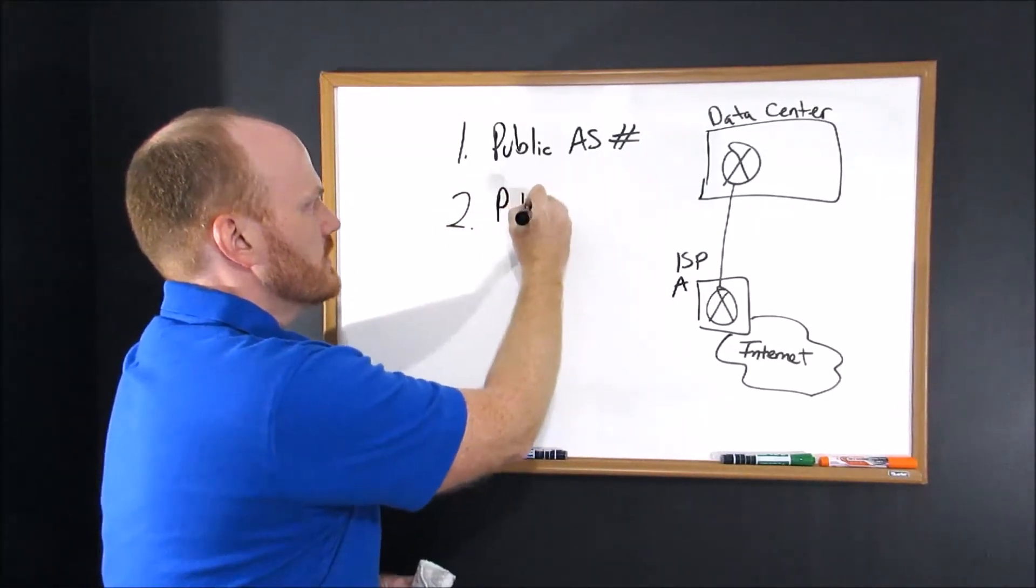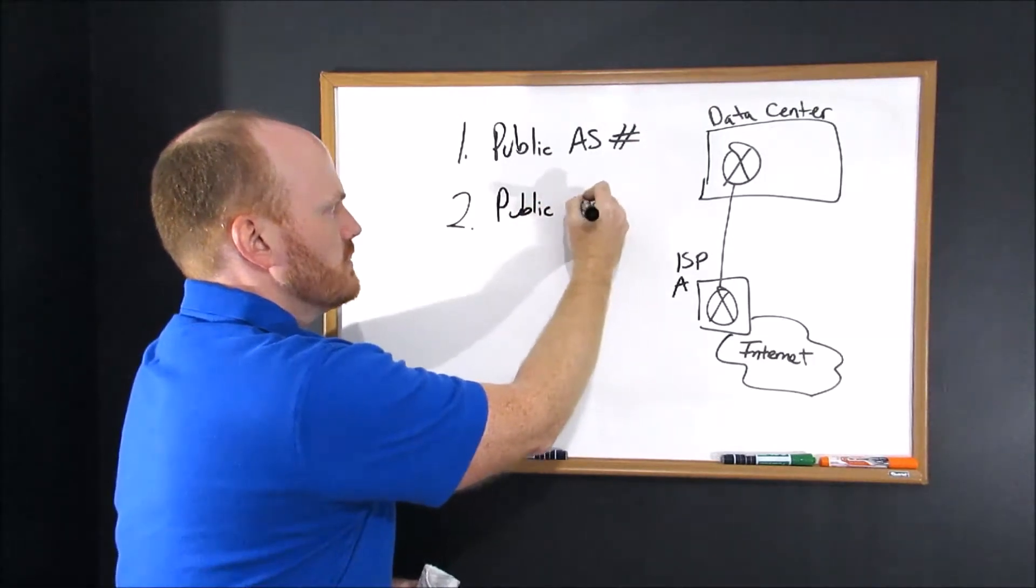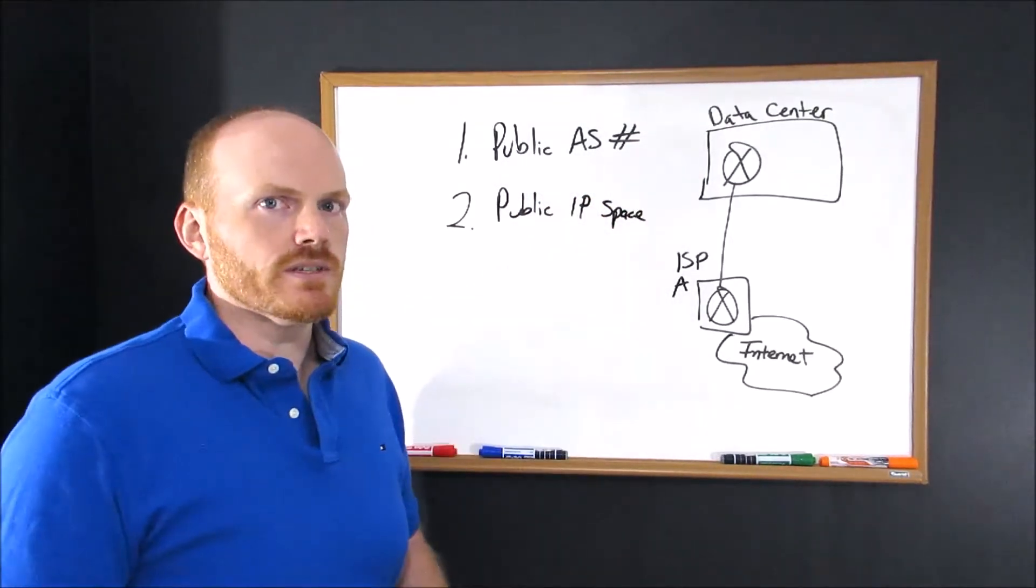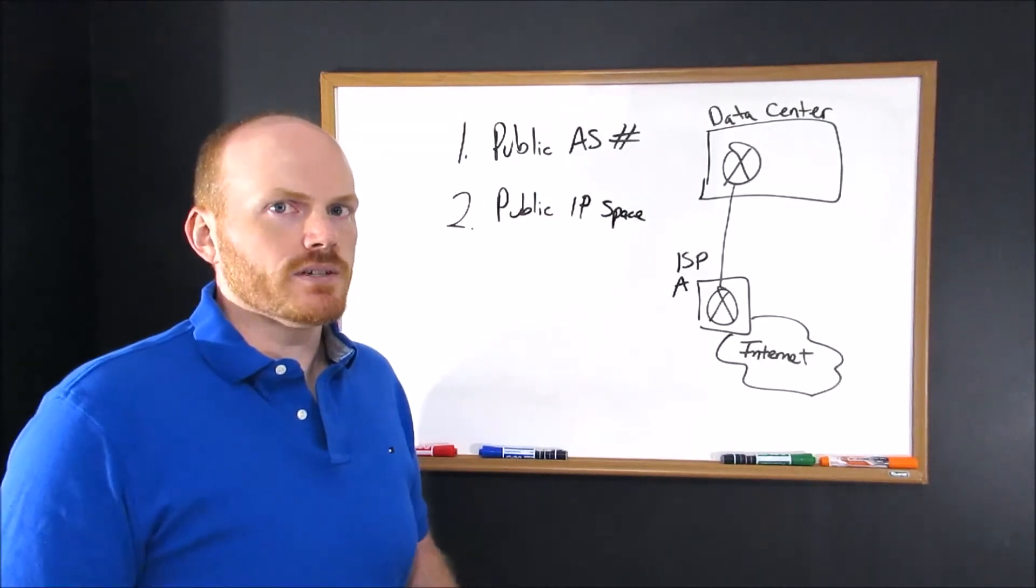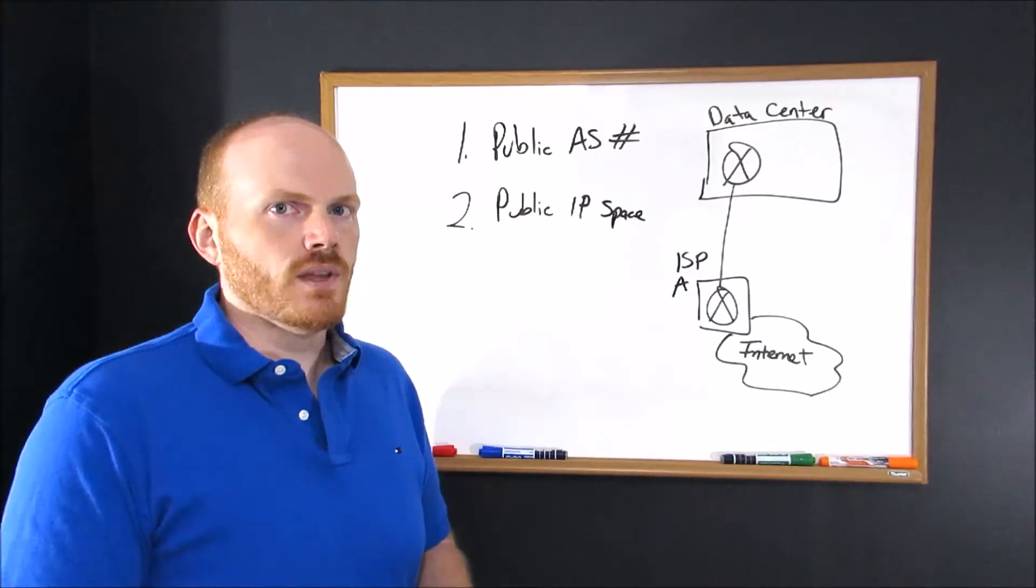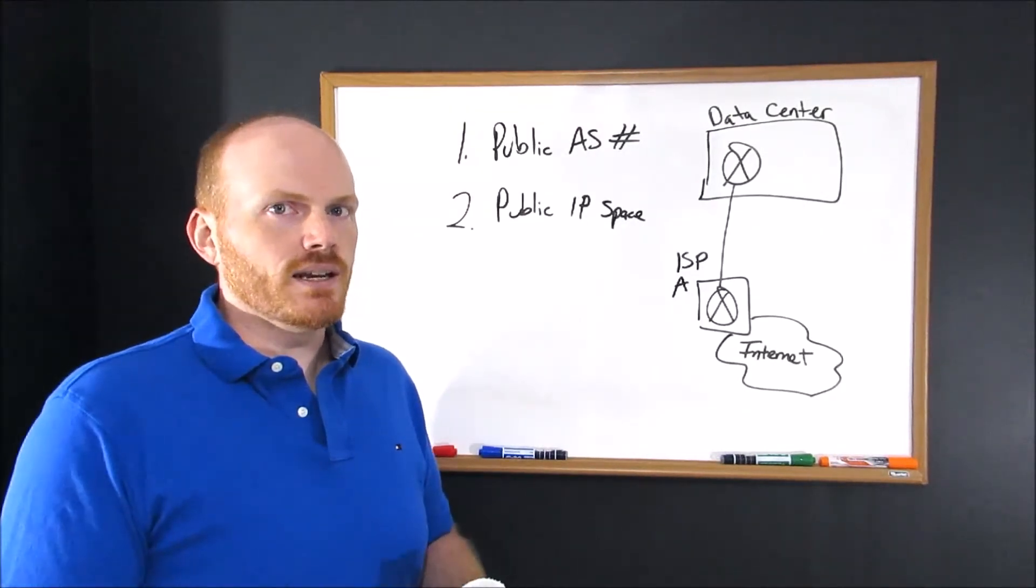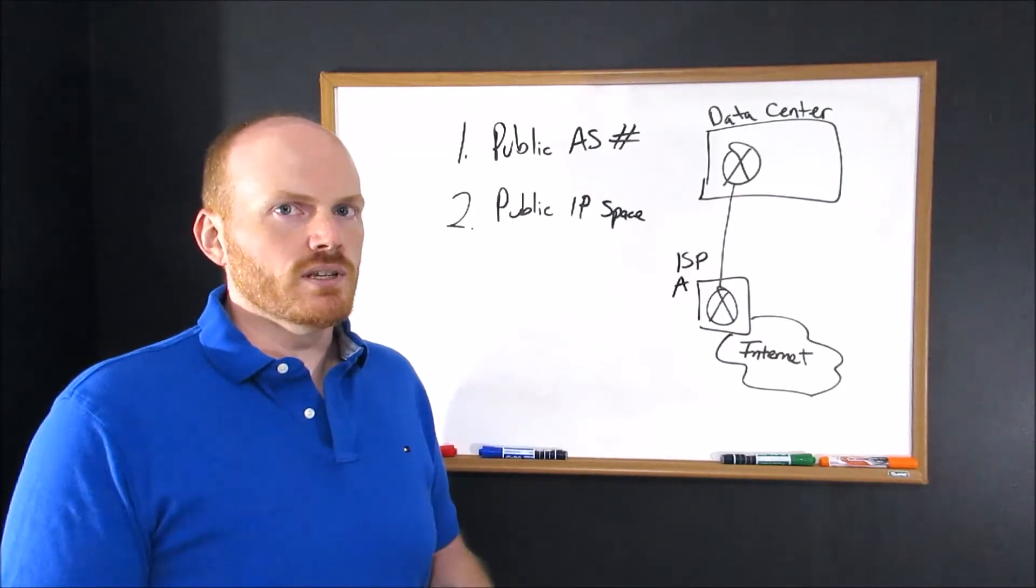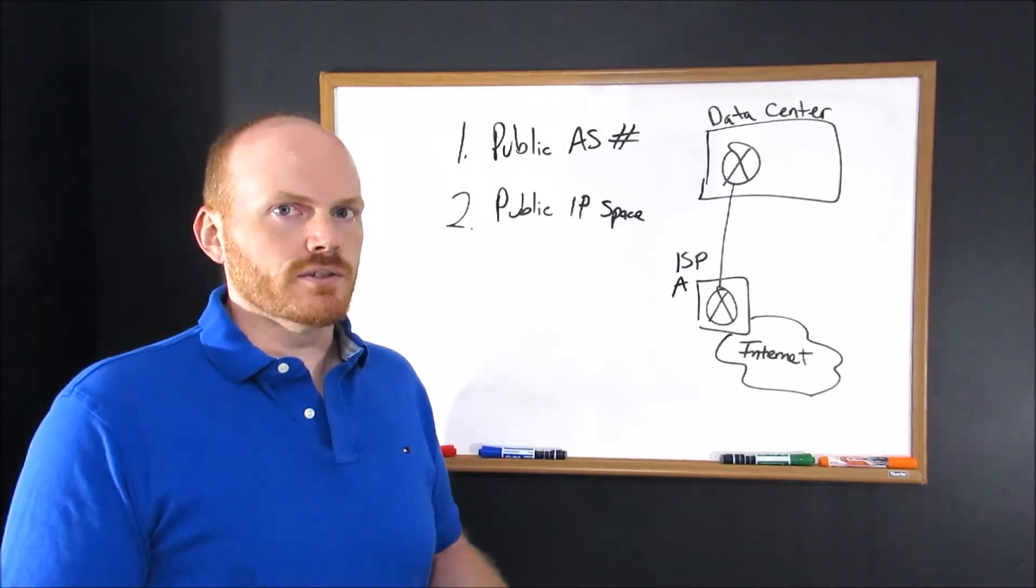Second, you're going to want to figure out where you're going to get your public IP space from. You have a few different options here. The easiest option is to borrow IPs from one of your ISPs. The downside with that is if you leave that ISP, you'll lose the IP addresses, which means you're going to have to renumber routers, firewalls, servers, and whatnot.